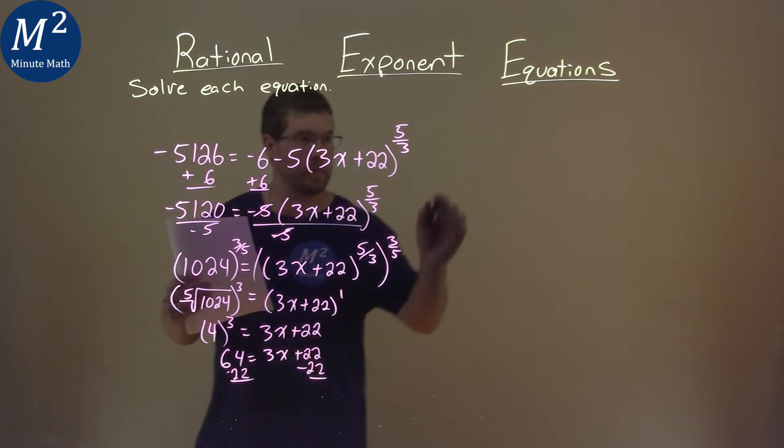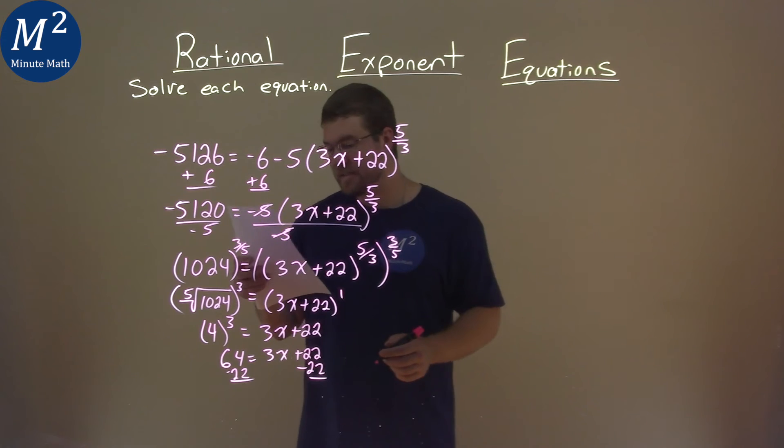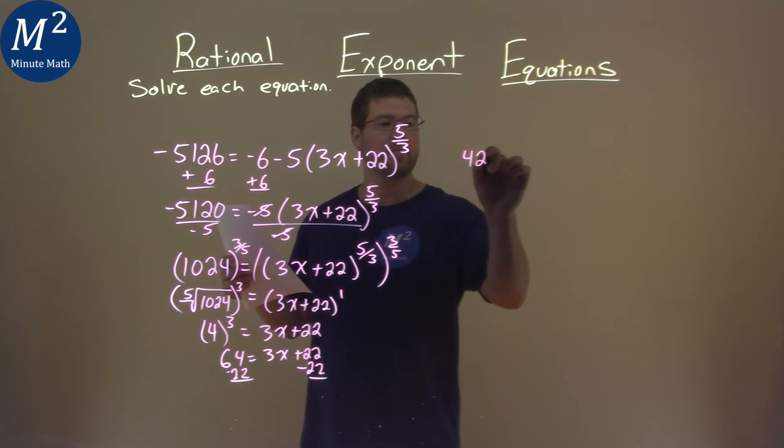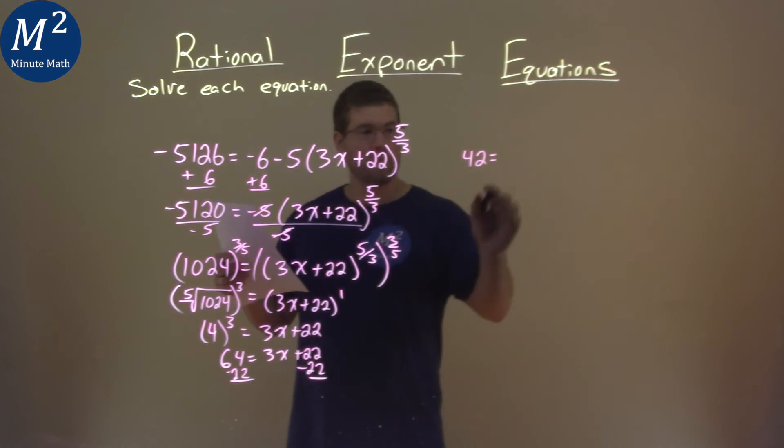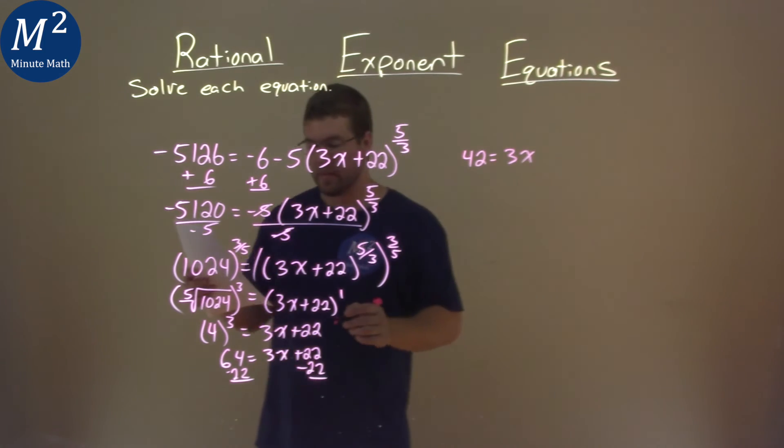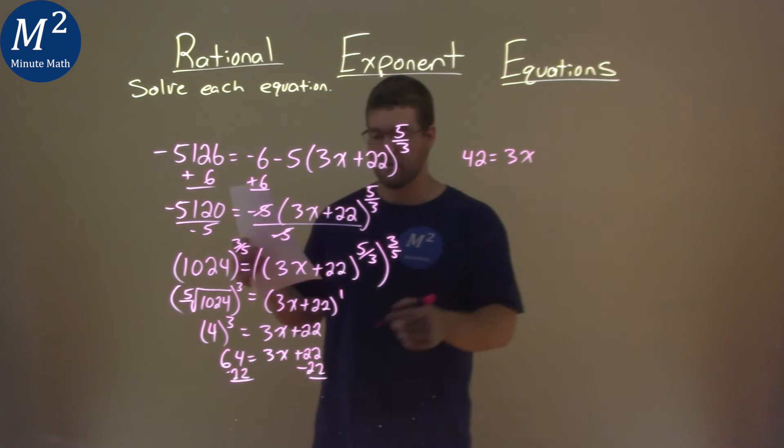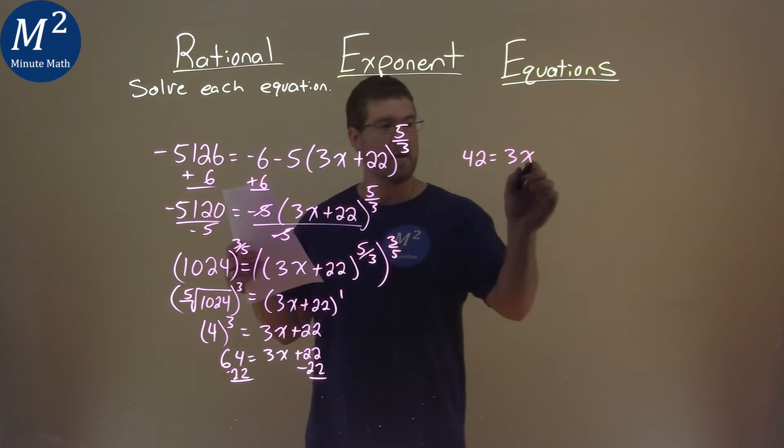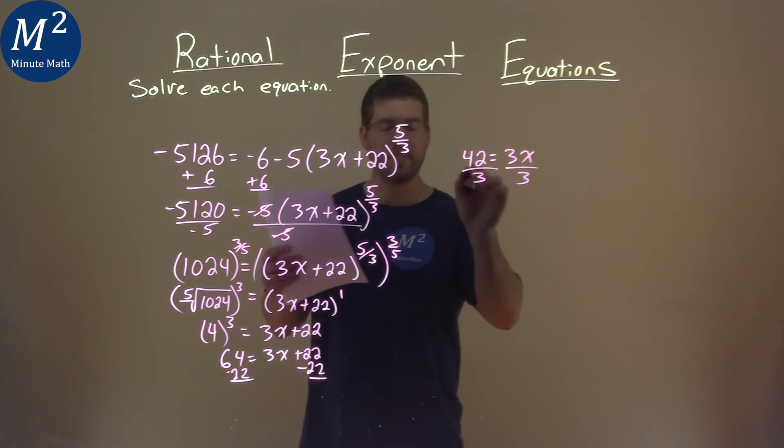Running out of room, so I'm going to put it over here. 64 minus 22 is 42, and that equals 3x. Divide both sides by 3: 42 divided by 3 is 14.